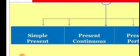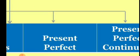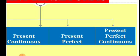Likewise, for present perfect tense, the structure is: subject plus have/has plus past participle form of verb.